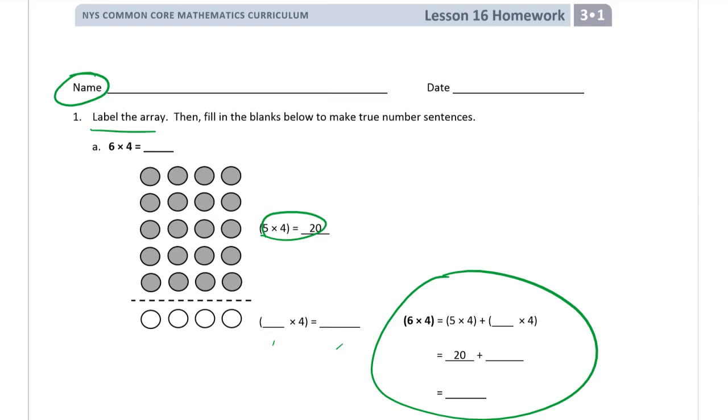5 times 4 is 20. Now, this is one row of 4, which equals 4. So, you can see that this part, this whole thing is 6 times 4, because it's 1, 2, 3, 4, 5, 6 rows of 4. So, that's this, 6 times 4 equals, the 5 times 4, that's where that comes from, plus the 1 times 4, that goes there.